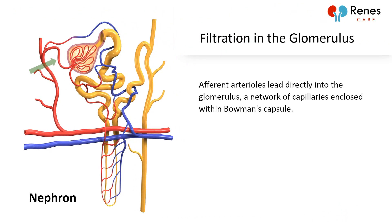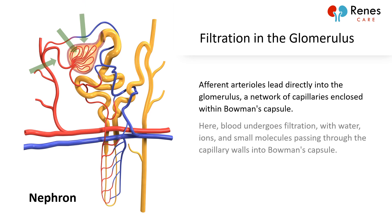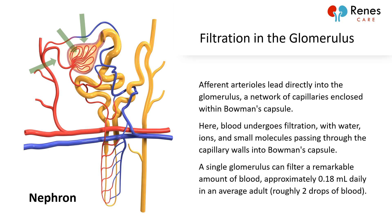Afferent arterioles lead directly into the glomerulus, a network of capillaries enclosed within Bowman's capsule. Here, blood undergoes filtration, with water, ions, and small molecules passing through the capillary walls into Bowman's capsule. A single glomerulus can filter a remarkable amount of blood — approximately 0.18 milliliters daily in an average adult, roughly two drops of blood.